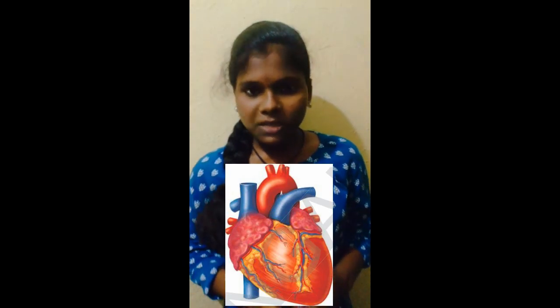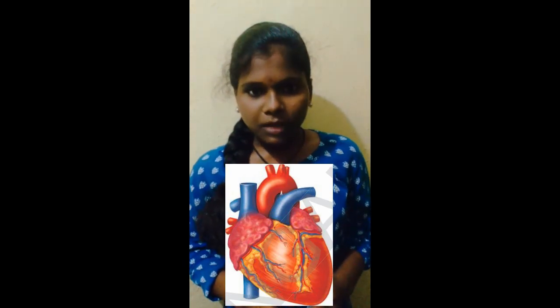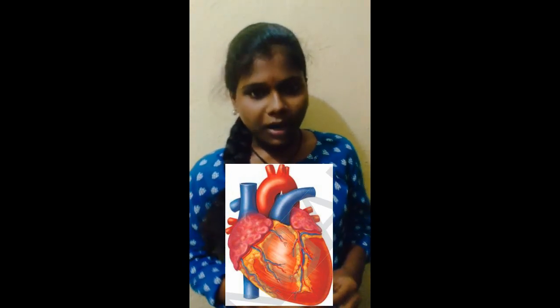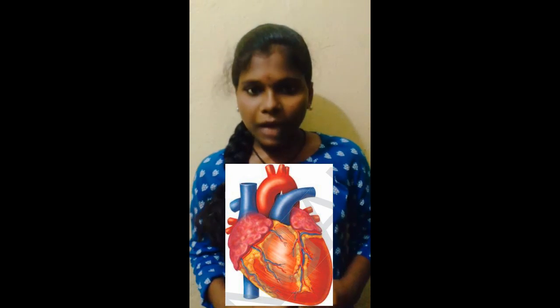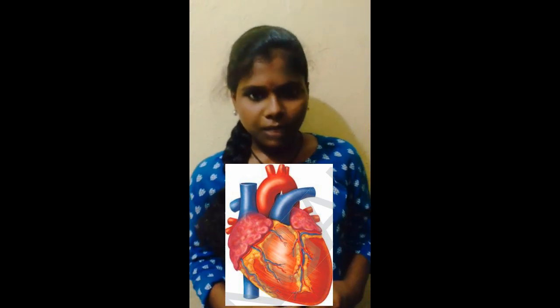The human heart is a pear-shaped structure. It is wider at the anterior and narrower at the posterior.